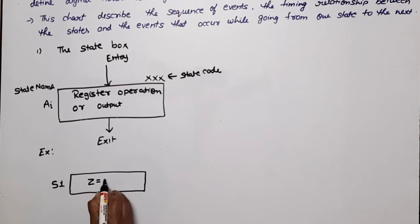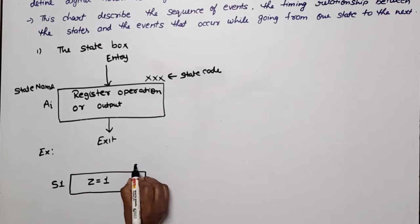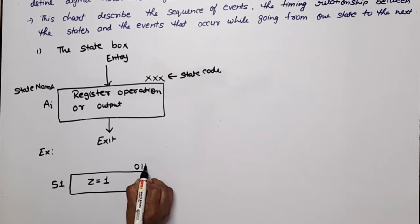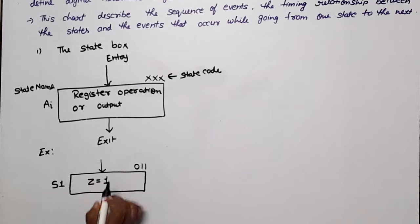For example, output Z value is 1. The binary value could be, say, 0, 1, 1. Here is the entry and here is the exit. So this is an example of the state box.